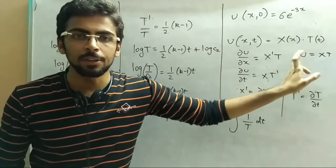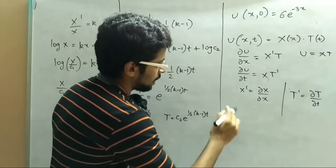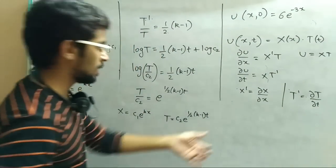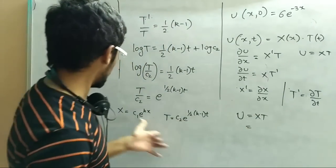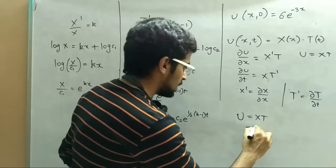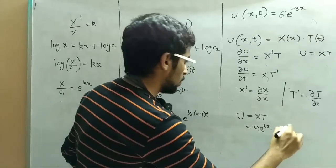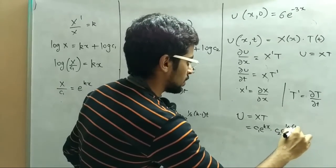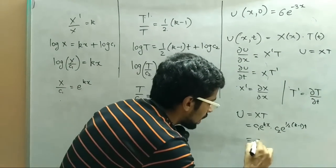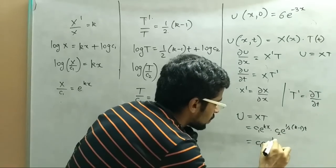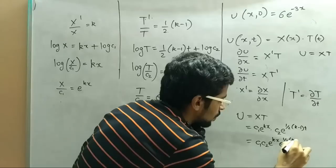Yahan pe u equals to X into T hai, toh ismein hum values put up karenge. When we put the values, u equals to X into T gives us: c1 e raised to kx into c2 e raised to one half (k minus 1) t. Combining terms: u equals to c1 into c2 times e raised to kx times e raised to one half (k minus 1) t.